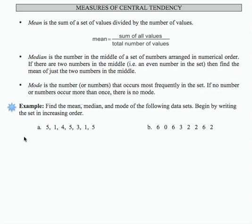So let's start by writing our data set in order. I'm going to write 1, 1, 3, 4, 5, 5, 5. That would be my first data set, and there are seven values in the data set.